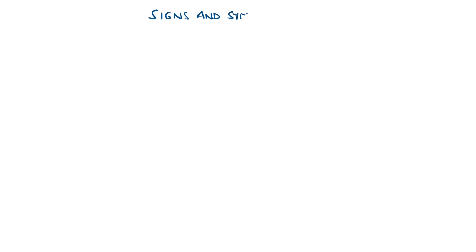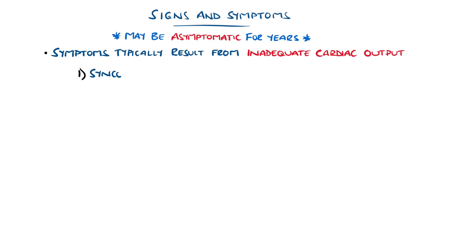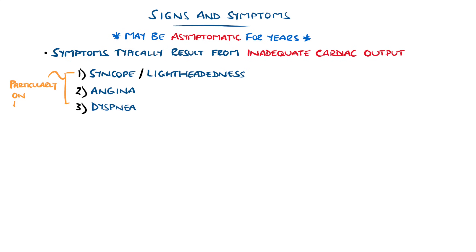Aortic stenosis may be asymptomatic for many years; however, as it progresses, symptoms develop. The classic features include syncope or lightheadedness, angina, and dyspnea — especially on exertion. Together these are sometimes called the SAD triad. These mostly occur because cardiac output is reduced and cannot increase enough to overcome the obstruction and meet the perfusion demands.